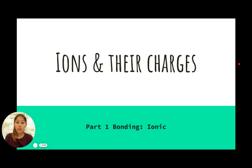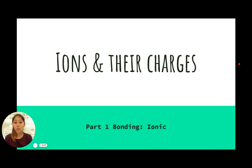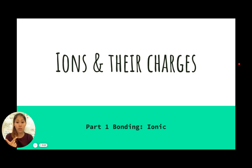Today we're going to take a look at ions and their charges. Ions are usually used to refer to charged particles that are formed in an ionic bond. In the other tutorials down below you'll be able to learn about how to name compounds — specifically compounds that are ionically bonded, covalently bonded, or both. An example of that is looking at polyatomic ions. In this specific tutorial we're going to take a look at how to figure out the charge of these ions and what ions even mean.